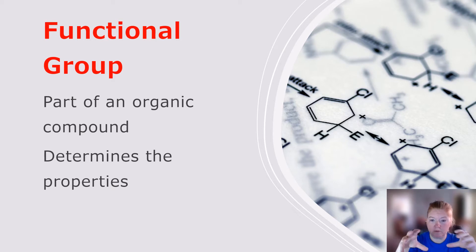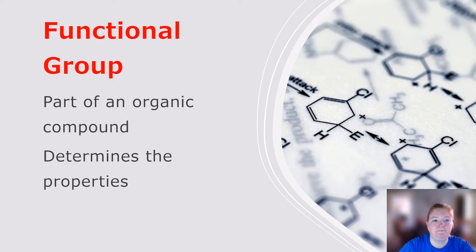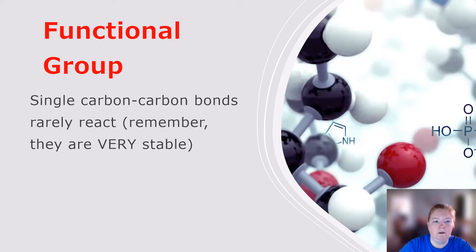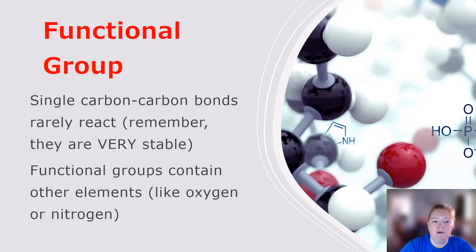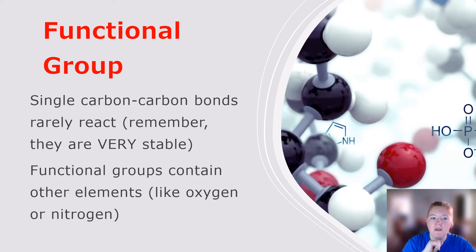Functional groups determine the properties of a compound, so we group them together. Single carbon-carbon bonds rarely react — they're really stable, as covered in earlier lessons. Functional groups typically contain other elements like oxygen or nitrogen, and that increases the reactivity of the organic compound.